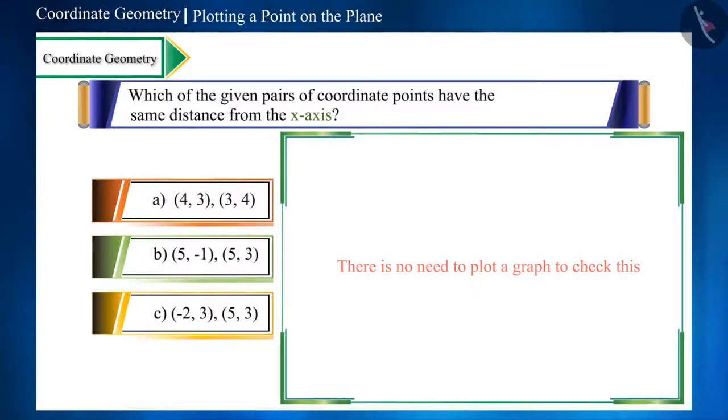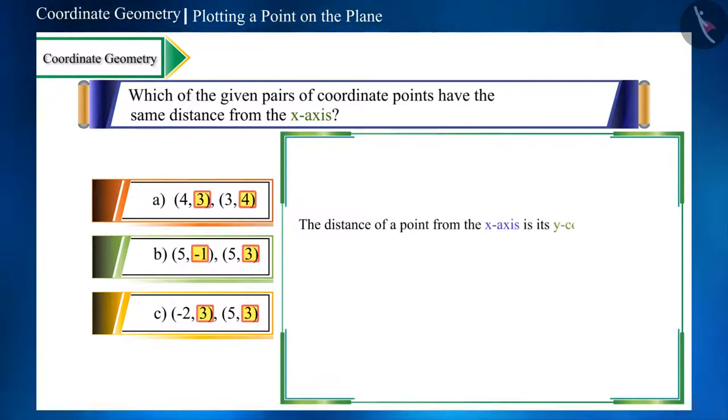First, let us consider some basics. The distance of any point from the X axis is its Y coordinate. That is, the pair whose Y coordinates are the same, those points will be of the same distance from the X axis.